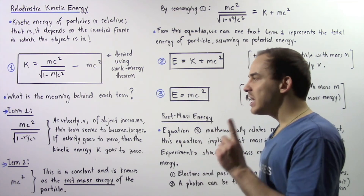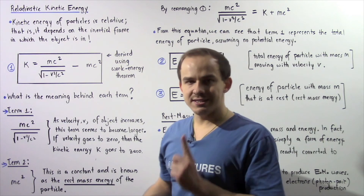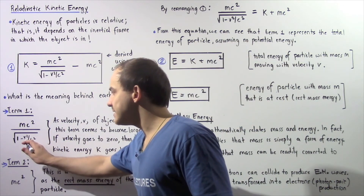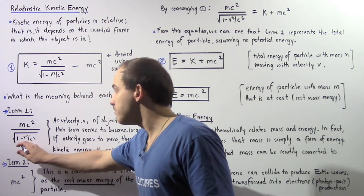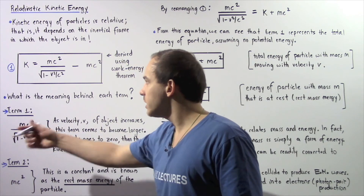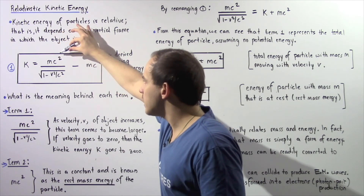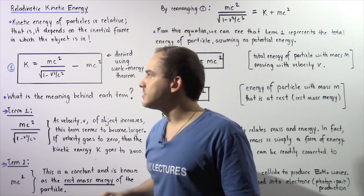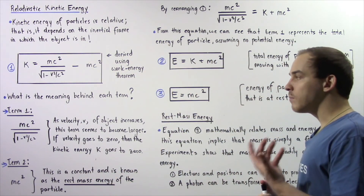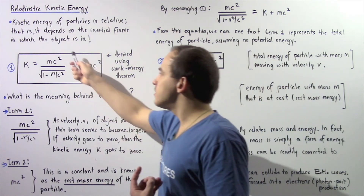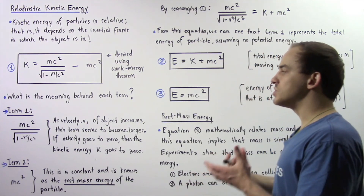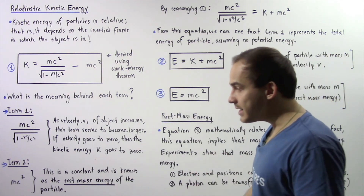However, what happens if the velocity goes to 0? If the velocity goes to 0, we have 1 minus 0, which is simply 1. The square root of 1 is 1, so we have mc squared minus mc squared, which gives us 0. So if the velocity of our particle goes to 0, term number 1 becomes mc squared and the kinetic energy of the object goes to 0.